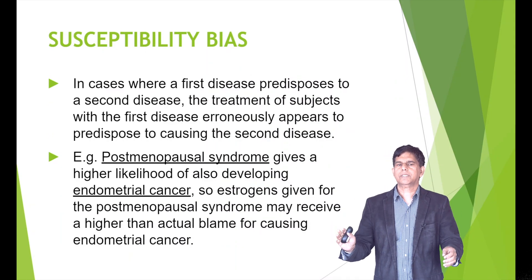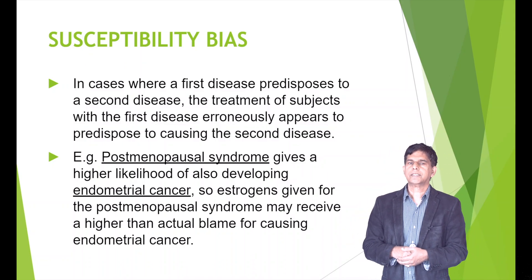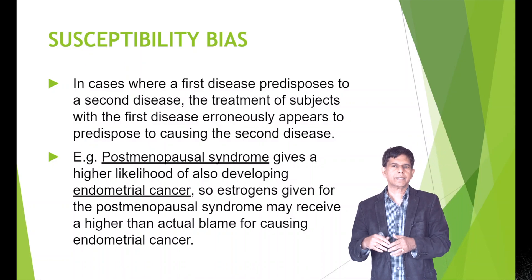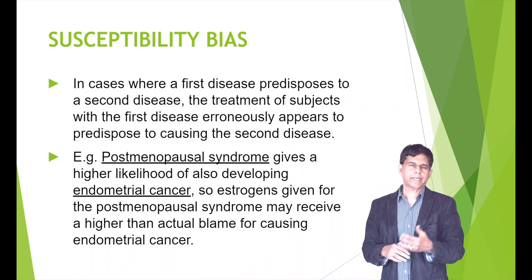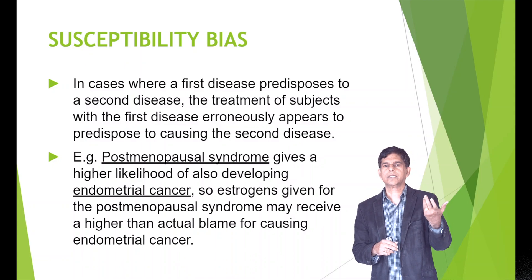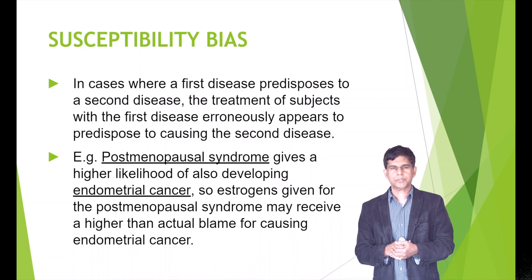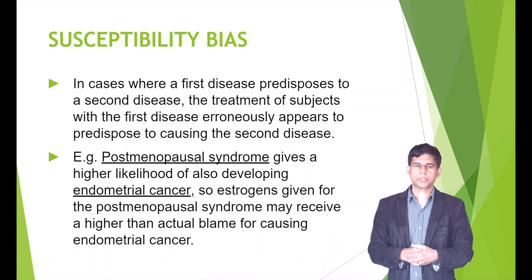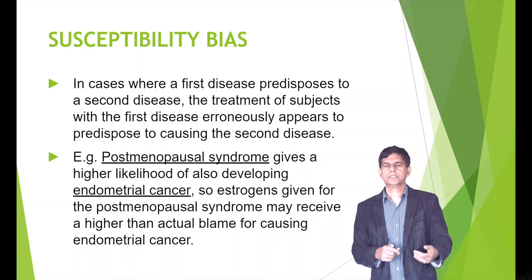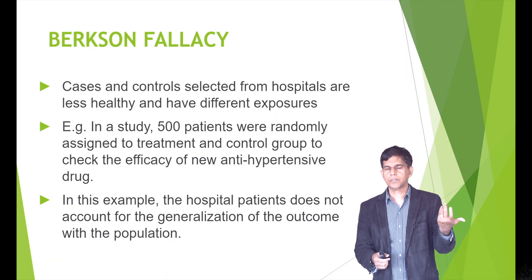Now let's look at susceptibility bias. This occurs when a first disease predisposes a patient to a second disease, and the treatment of a subject with the first disease erroneously appears to cause the second disease. For example, a patient with post-menopausal syndrome has a higher likelihood of developing endometrial cancer, so estrogen given for post-menopausal syndrome may receive more blame than it deserves for causing endometrial cancer.